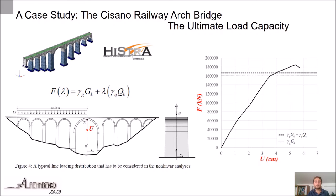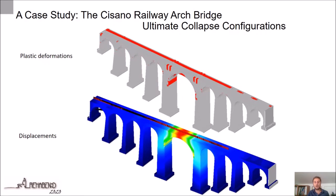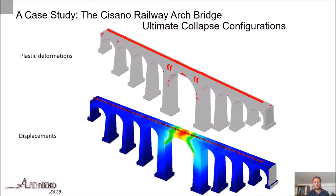In order to assess the ultimate load capacity, several nonlinear static analyses of the entire bridge were performed under different loading conditions, adopting the arc length method. The traffic load, due to the train convoy, was simulated by a uniform line load distribution applied on the central axis of the track, adopting different loading lengths. The graph on the right reports the push-down curve obtained for the load distribution shown in the picture on the left. In the abscissa is reported the vertical displacement of the control point, while the vertical load applied is reported in the ordinates. The influence of the position of the load distribution on the nonlinear response of the bridge was investigated.